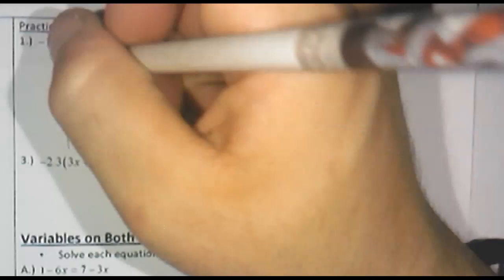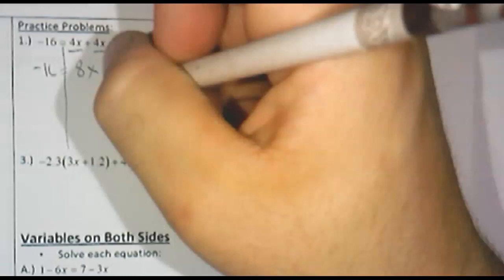Okay, guys. Carrying on here. A lot of these don't have as many steps as that very first one. On this one, I'm going to combine like terms here on the right. Line down from the equal sign. And then the negative 16 doesn't have any like terms. So I'm just going to bring that down. And 4x plus 4x is 8x.